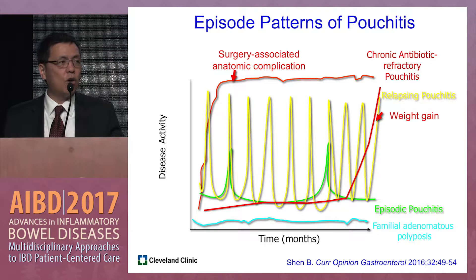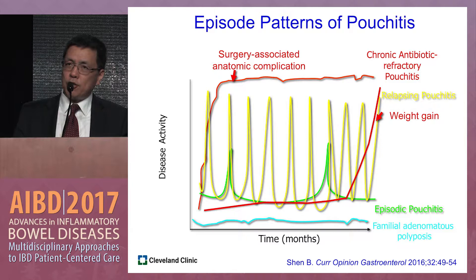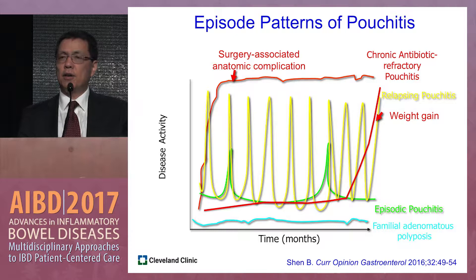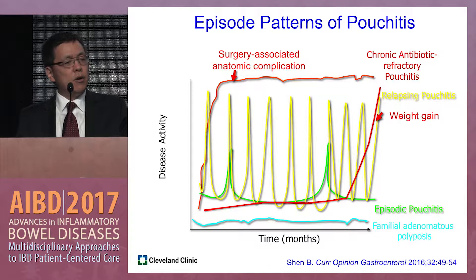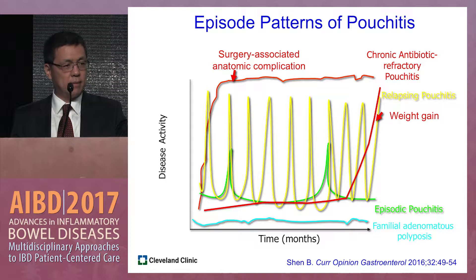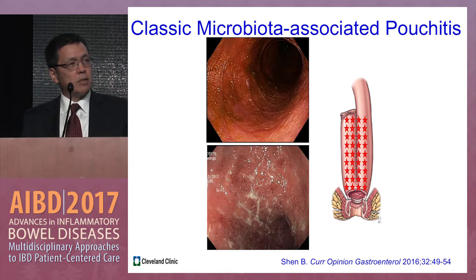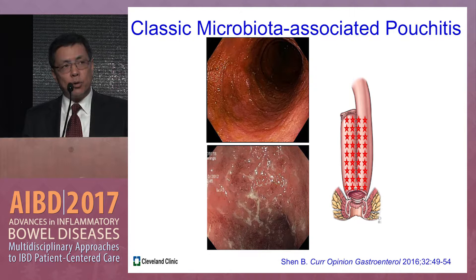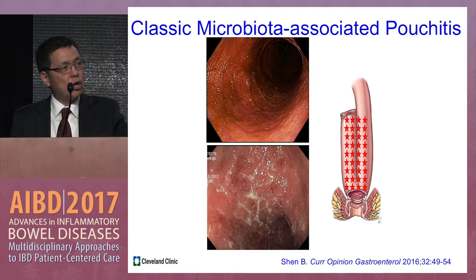If a patient develops pouchitis immediately after stoma closure, always consider mechanical or surgery-related issues. In recent years, we noticed some patients maintain the pouch well and then slowly develop pouchitis, with weight gain — especially in male patients — identified as a probable risk factor. It is important to document not only the degree but also the distribution of pouch inflammation on endoscopy. In classic microbiota-associated pouchitis, inflammation is localized to the pouch body, with the afferent limb normal.